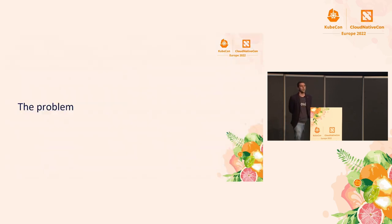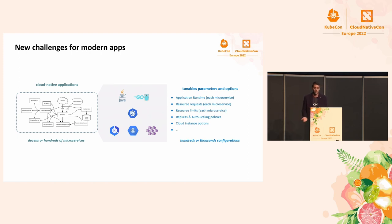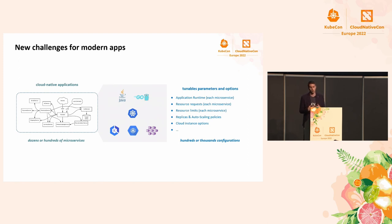Let's start with a quick introduction about what the problem is. As you all know, applications are evolving. Monoliths are quickly disappearing, and modern cloud-native applications feature dozens or even hundreds of microservices, spanning over a wide set of technologies. All these technologies come with tunable parameters and options themselves, and as a result, we must deal with hundreds of thousands of possible configurations. So how do you find the configuration that best suits our workload?